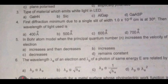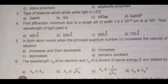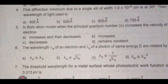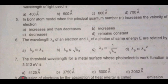Fifth one, in Bohr atom model, when the principal quantum number n increases, the velocity of electron. Sixth one, the wavelength of an electron and lambda p of a photon of same energy E are related by.